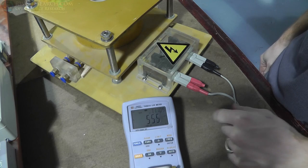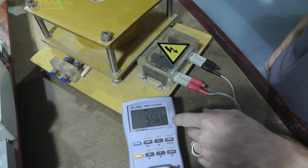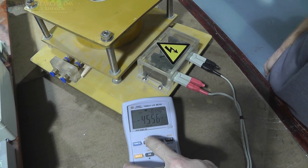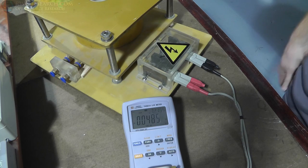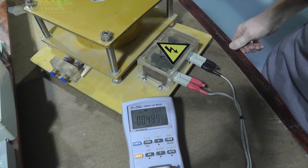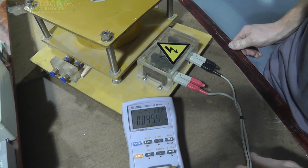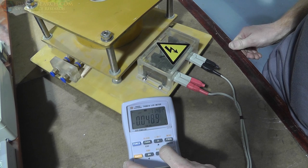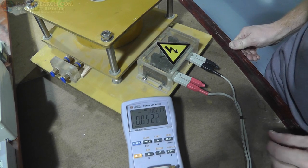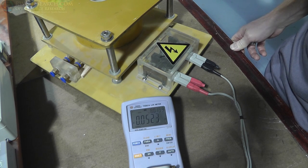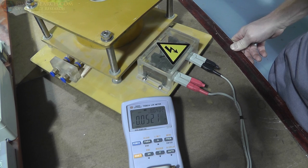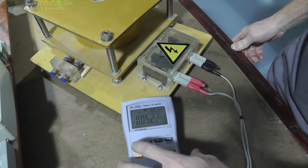I'm going to set this to 100 hertz and let's check the resistance. It's about 0.049 of an ohm. And let's go ahead and change the frequency to 120. So it's about 0.0521 of an ohm. That's pretty low.